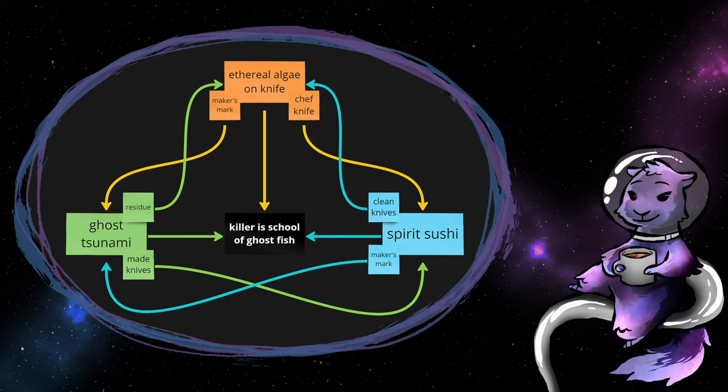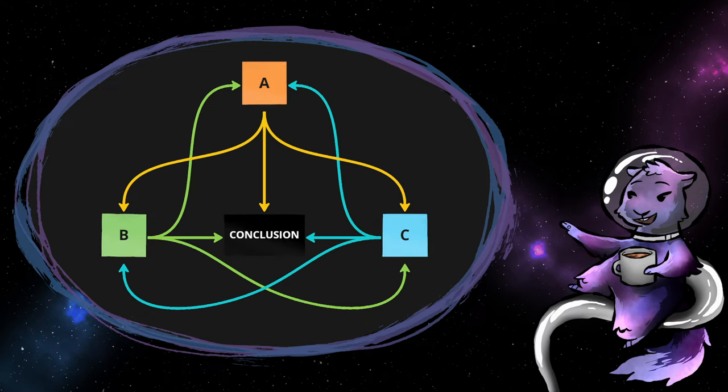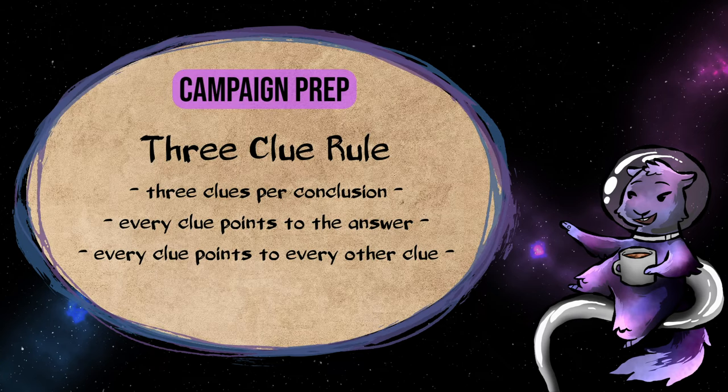Comparing them to the murder weapon will reveal the ethereal algae. I could say a lot about the merits of this specific system, but what matters for our purposes is that it is a system. Nothing on this diagram tells you what kind of clues to create or where to put those clues. It tells you how to approach crafting clues in the first place.